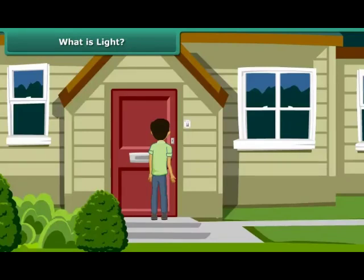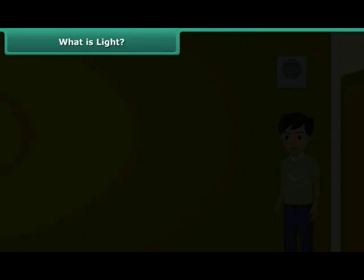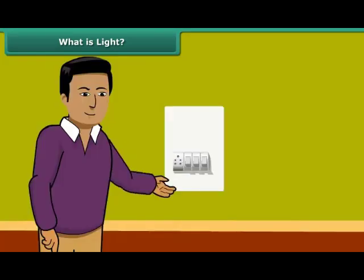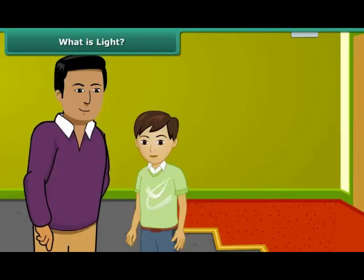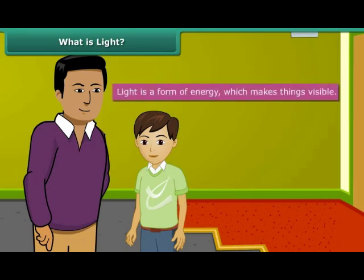It's night and you step inside the house. There is darkness all around and everything appears black. You can hardly see anything. Your father switches the light on and now you can see everything clearly. It means light enables viewing. Therefore, light is defined as a form of energy which makes things visible.